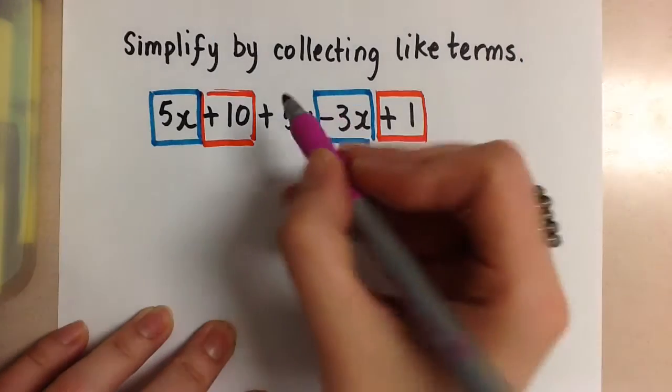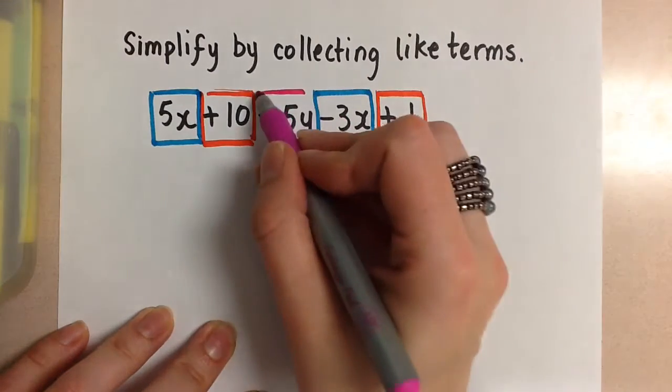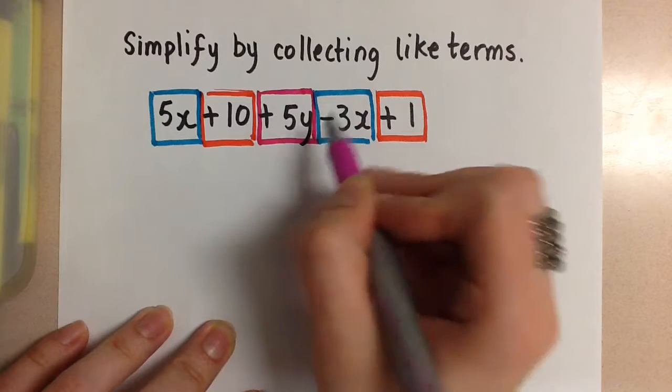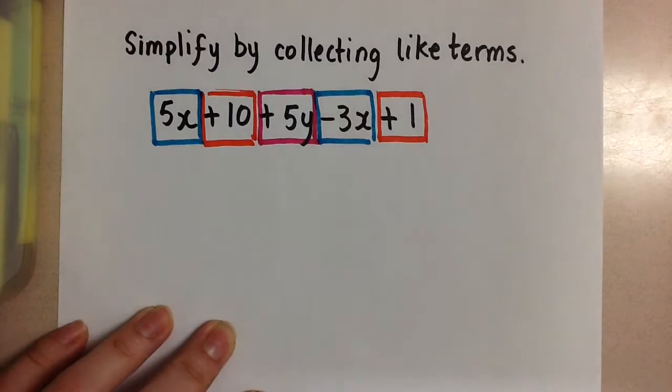The plus 5y, well it's going to stay the same and it's not going to combine with anything because that doesn't have any like terms. There are no other terms in this polynomial that have a y in it.